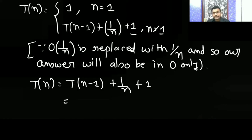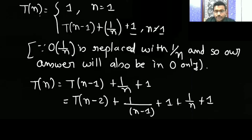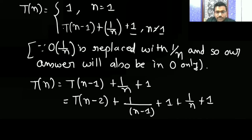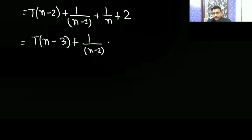Using iterative substitution: when size is n, it reduces to T(n-1) plus 1/n plus 1. When size is n-1, it reduces again to T(n-2) plus 1/(n-1) plus 1. Substituting T(n-1) gives T(n-2) plus 1/(n-1) plus 1/n plus 2. The pattern of plus-1 constants accumulates.